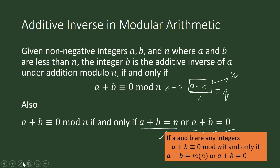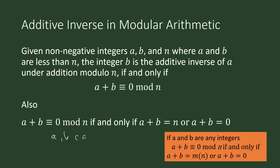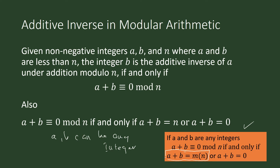Now, if we remove the restriction on a and b so that a and b can be any integer, then we say: b is the additive inverse of a if and only if a plus b is congruent to 0 modulo n. That is also true if and only if a plus b is a multiple of n — that is, a plus b equals m times n, or a plus b equals 0.